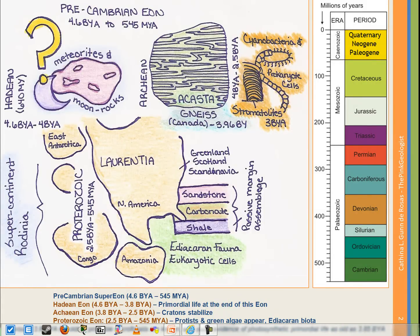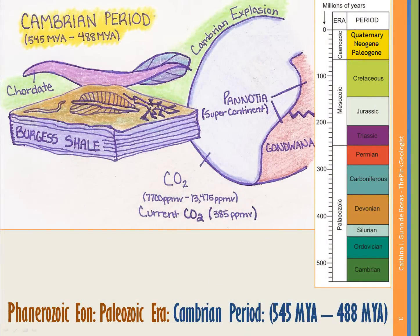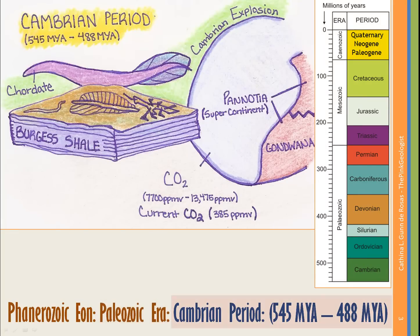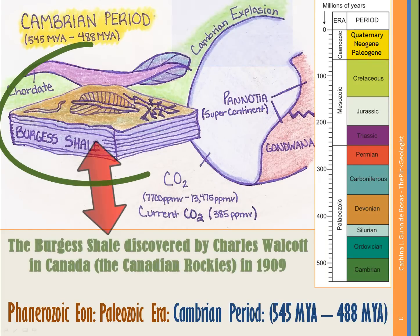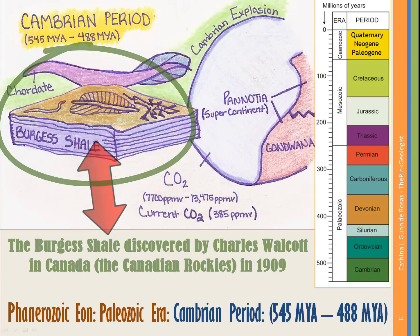Now we move our discussion to the Phanerozoic Eon, which covers all of time from about 545 million years ago until now — and this is where things start to get really active. The first era in that eon is the Paleozoic Era, covering about 545 to 251 million years ago. The first period is the Cambrian, 545 to 488 million years ago, and it is in the Cambrian that we see the Cambrian Explosion — a rapid, geologically speaking, diversification of life on Earth unlike anything seen before, best represented by the Burgess Shale.